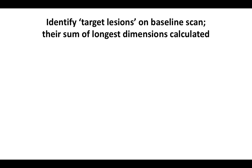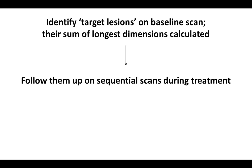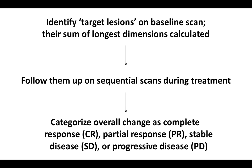How do we use RECIST? In RECIST we identify target lesions on the baseline scan and then the sum of their longest dimensions is calculated. We select the largest measurable lesion that appears best reproducible. For example, if a patient has two lung nodules — one spiculated and one round — of pretty much the same size, the round nodule is preferably selected as a target lesion. The target lesions are then followed on sequential scans during chemotherapy and the overall response is categorized as either CR, PR, stable disease, or progression.